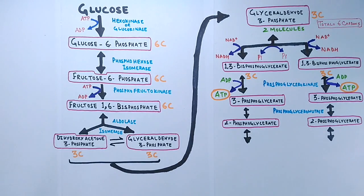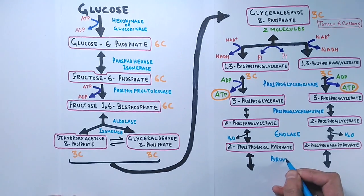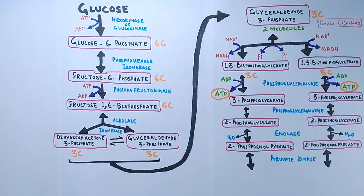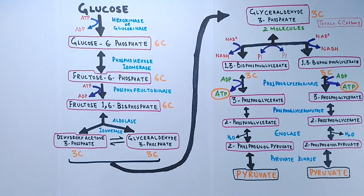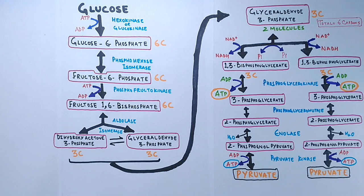After that, the enolase enzyme converts 2-phosphoglycerate to phosphoenolpyruvate. In this reaction dehydration also occurs. And finally, a final substrate-level phosphorylation occurs which forms a molecule of pyruvate and a molecule of ATP by means of enzyme pyruvate kinase. So finally we get two molecules of pyruvate from phosphoenolpyruvate.